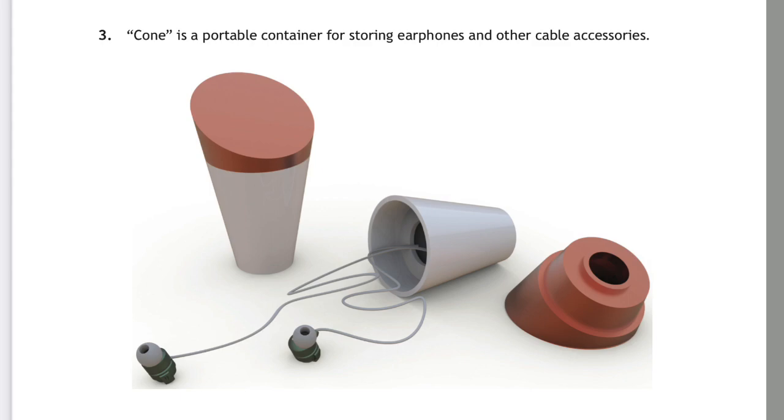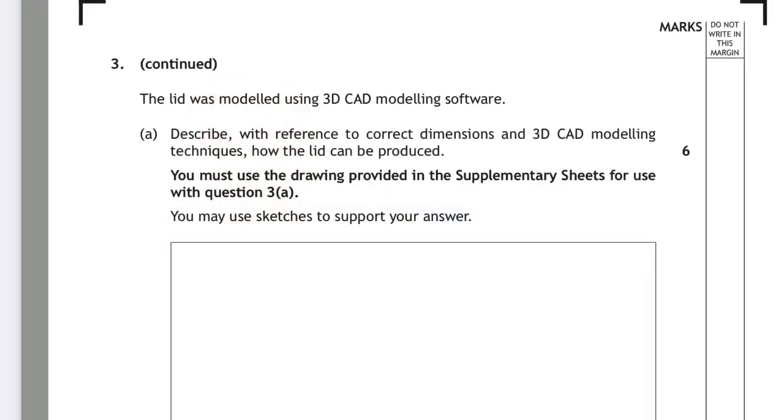Cone is a portable container for storing earphones and other cable accessories. The lid was modelled using 3D CAD modelling software. Describe with reference to correct dimensions and 3D CAD modelling techniques how the lid can be produced. You must use the drawing provided in the supplementary sheet for use with question 3a. You may use sketches to support your answer. This is a 6 mark question.